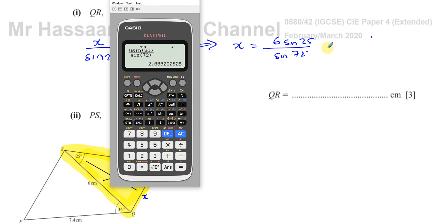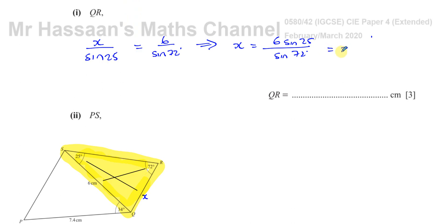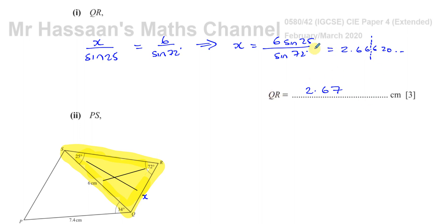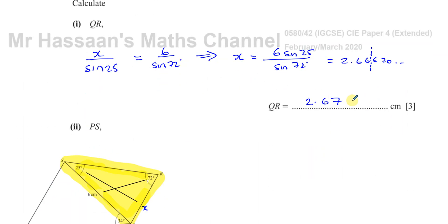That gives us 2.6662, which continues on further. So we're going to round this because it's not an exact answer. As the instructions at the beginning of the paper tell us, for non-exact answers we should round to three significant figures, which gives us 2.67. This is a length and it's not an exact answer, so we round to 3SF.